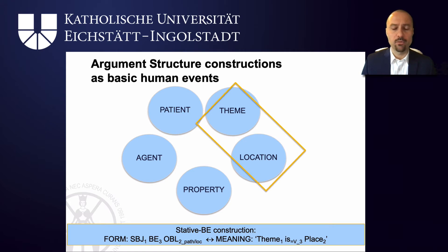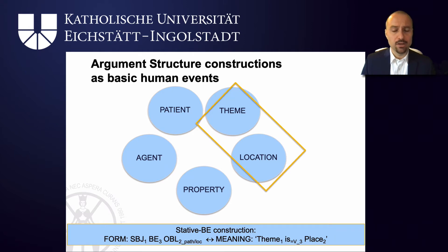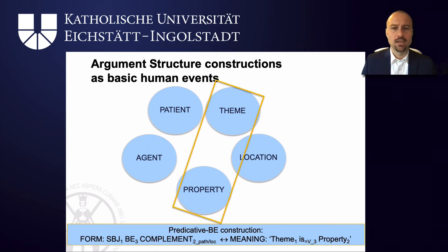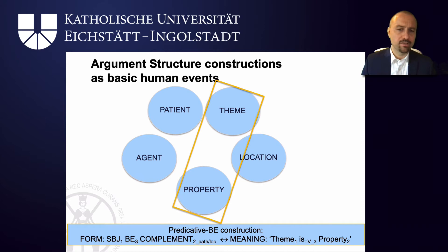You can also have the relationship between a theme and a location which is stationary. In the state-of-be construction — 'he is in the house', 'the fly was next to the cheese', 'a few leaves are on the ground' — theme and location are still involved, but now the constructional construal of this scene is one of stationary location. Themes can also be assigned properties via the predicative be construction, as in 'he is ill', 'the fly was dead', 'a few leaves are green', where the subject slot gives you the theme and the subject complement slot gives you the property of the theme.